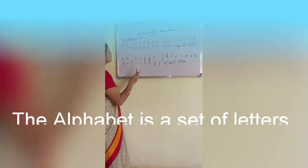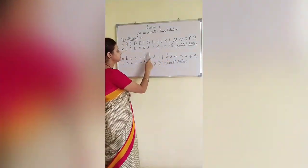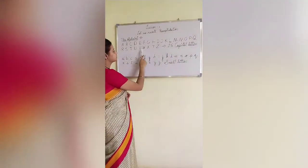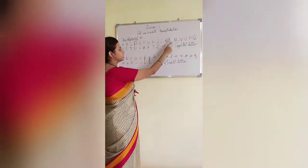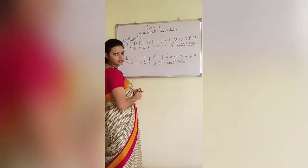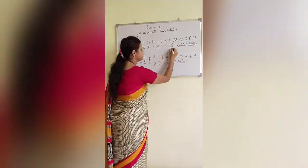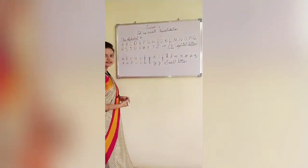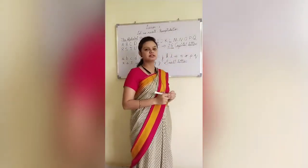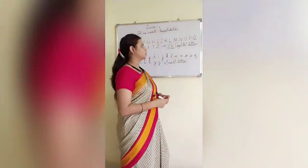Now, you can see the letters written here of the English alphabet. So, if we count all these letters, how many will there be? It will be 26. There are 26 letters of the English alphabet.